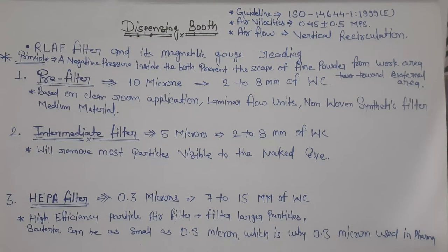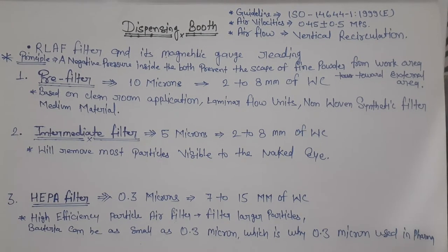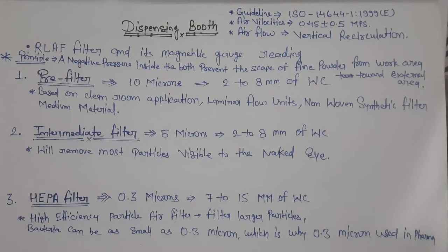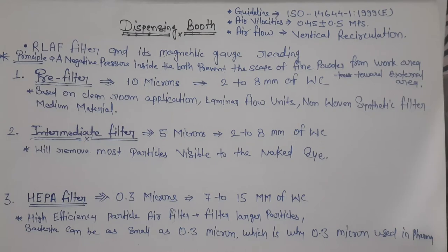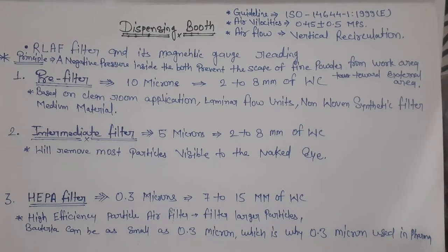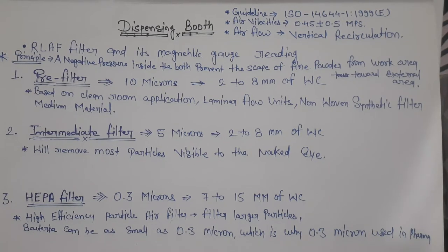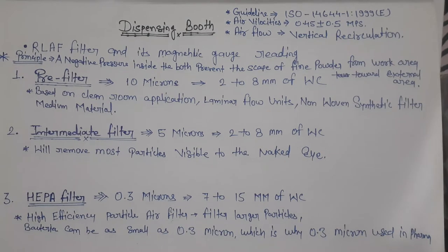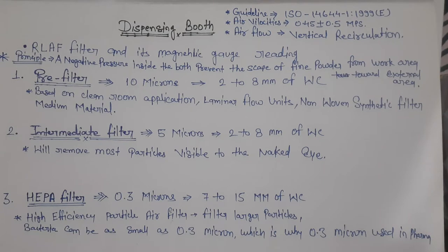The guidelines used for dispensing booths is ISO 14644-1. Air velocity is 0.45 plus minus 0.05 mps and airflow is vertical recirculation. Let's see the return laminar air flow filter and its manometric gauge reading. The principle is based on negative pressure inside the booth to prevent the escape of fine powder from the work area toward the external environmental area.